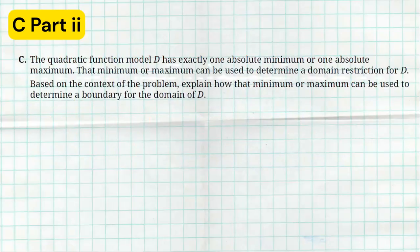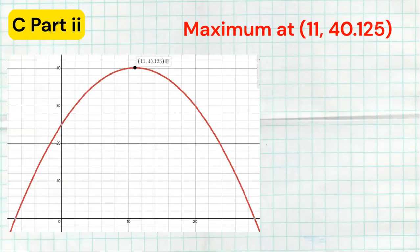All right, in the final section of question two, it says the quadratic function model D has exactly one absolute min or absolute max. Of course, all quadratics do. That min or max can be used to determine the domain restriction for D. Based on the context of the problem, explain how that min or max can be used to determine the boundary for the domain of D. So the first thing I did was went back to that graph I made in Desmos and I found the max because I clearly needed to identify that it was a max. And that max was at (11, 40.125). Now that's going to help me understand the domain. The domain restriction is going to be zero to 11.